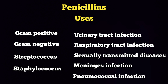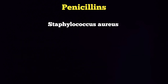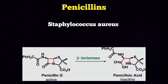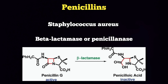But there is a problem with penicillin use. Some organisms possess resistance to penicillin. Some organisms secrete an enzyme which will metabolize the penicillin. One organism will secrete an enzyme known as beta-lactamase or penicillinase, which metabolizes and inactivates the penicillin drug. That's why the microorganism becomes resistant to penicillin.